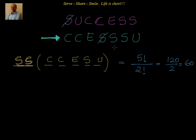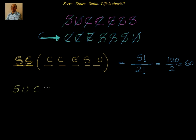We strike off SU. Coming back to the remaining letters in order — C, C, E, S, S — we check each position of SUCCESS against alphabetical order. The letters C, C, E, S, S appear in exactly that order in SUCCESS after SU, so we strike off each one and confirm that SUCCESS itself is the last arrangement in this group. That contributes just 1 word.